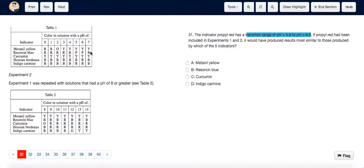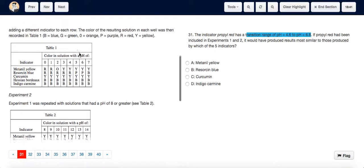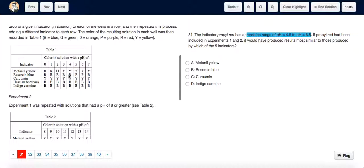We can see that resorcin blue at pH 5 and 6 has a different color - it has purple color as compared to red before 5 and blue after 6. So the answer is going to be B, resorcin blue.